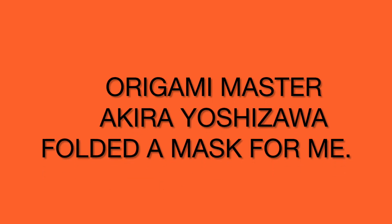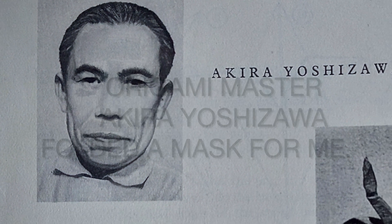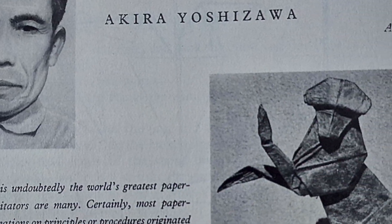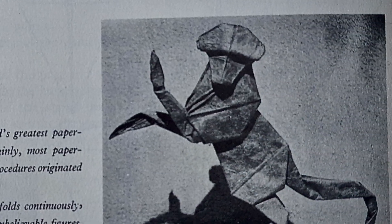In 1967 I got my first origami book called Secrets of Origami and it was a picture of Akira Yoshisawa, the Japanese expert, and a monkey he'd made.